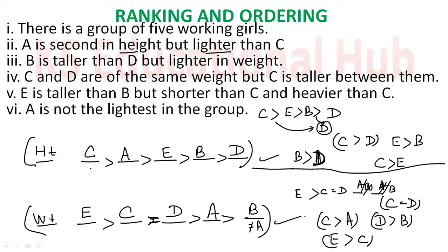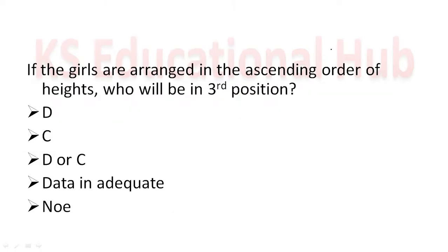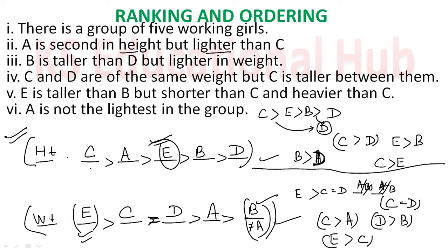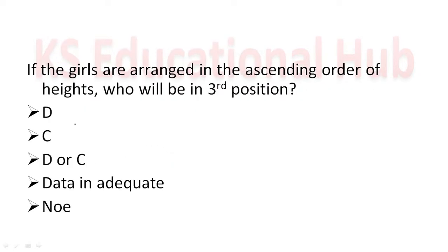Question 1: If the girls are arranged in ascending order of height, who will be at the third position? Ascending order of height — the third position is E. Answer: E.